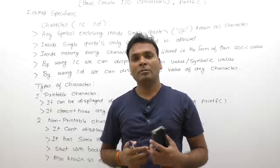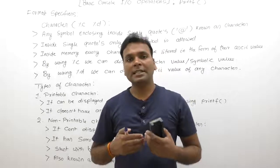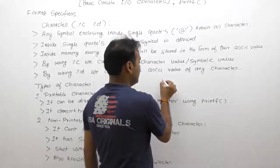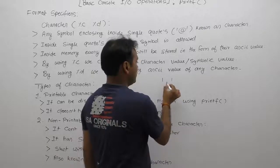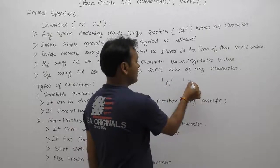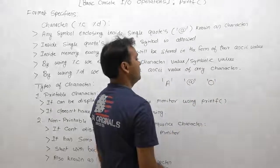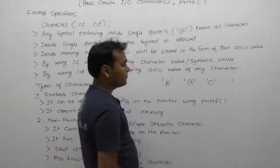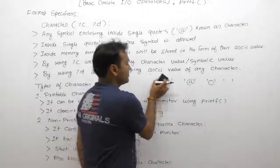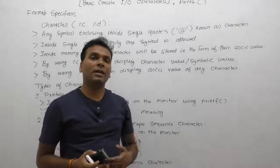Before discussing printf with characters, you must have an idea about characters. Anything enclosed inside single quotes is known as a character in C language. For example, 'a' is a character because it is enclosed inside single quotes. Characters may be alphabets, special symbols, digits, or even a space. Anything enclosed inside single quotes is a character, and inside memory every character is stored in the form of its ASCII value.